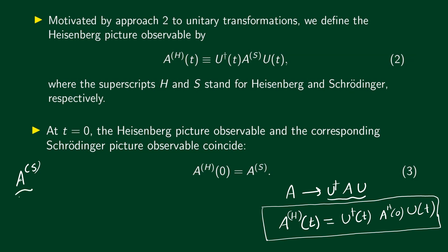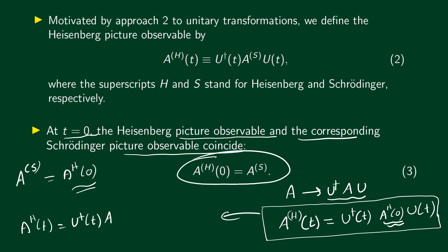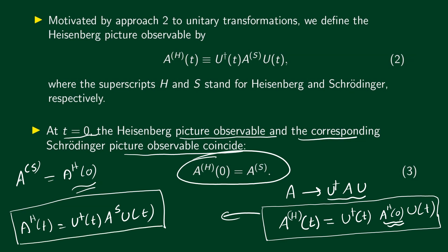In the Schrödinger picture, we denote operators with superscript S and they do not depend on time — they remain the same at all times. This means the Schrödinger picture operator equals the Heisenberg picture operator at time 0: A^S = A^H(0). Therefore, at t = 0, the Heisenberg picture observable and the corresponding Schrödinger picture observable coincide. Substituting, we get A^H(t) = U†(t) A^S U(t), which connects the Schrödinger and Heisenberg picture operators.